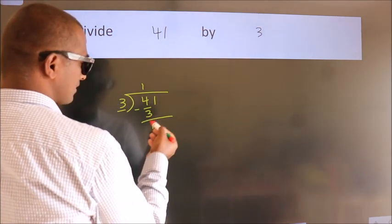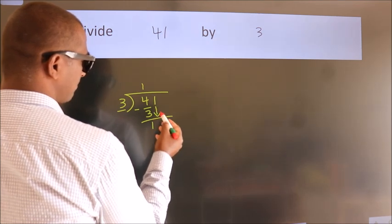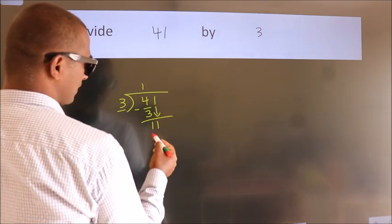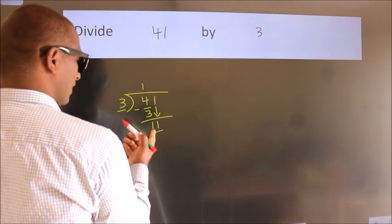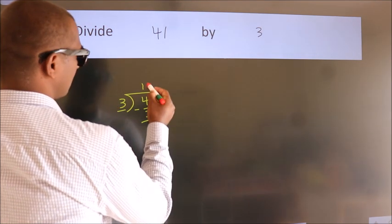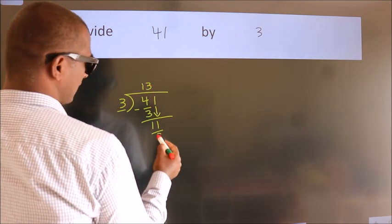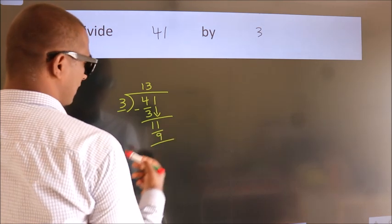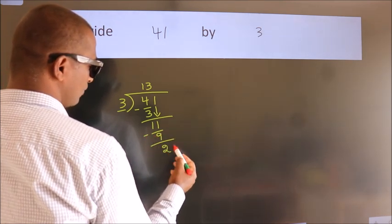After this, bring down the next number. So 1 down, so 11. A number close to 11 in the 3 table is 3 times 3 is 9. Now we subtract. We get 2.